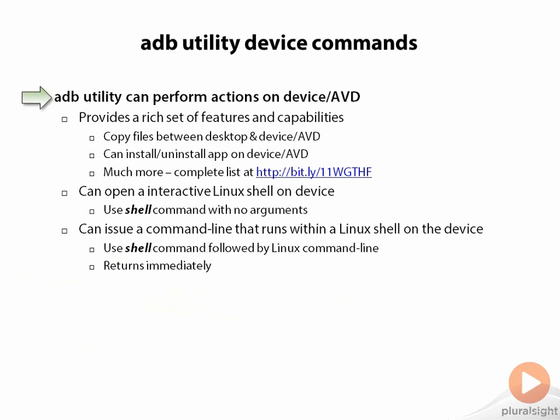ADB can also be used to send commands and information out to devices and virtual devices, and it provides a really rich set of capabilities. You can do things like copy files to or from the device, install applications onto the device, and kill processes — there's a lot you can do. The full list of commands is available at the ADB utility URL. Most of those things you can also do graphically another way, but there are a few things ADB does that are not really available graphically.